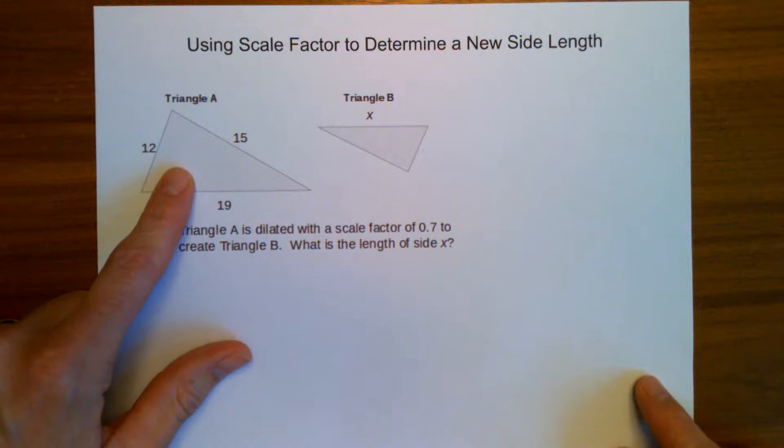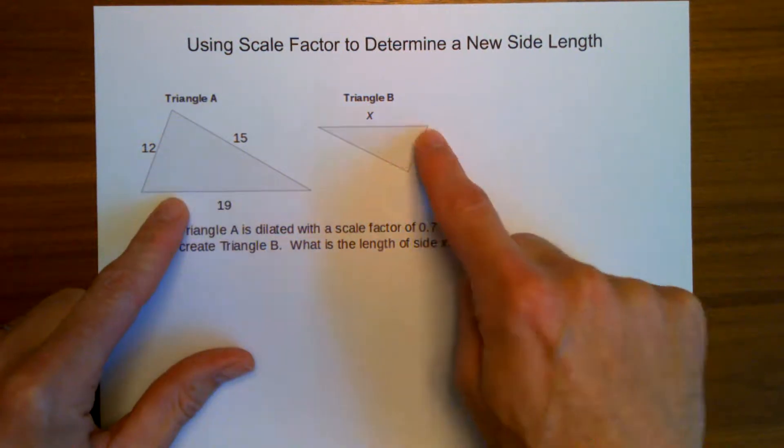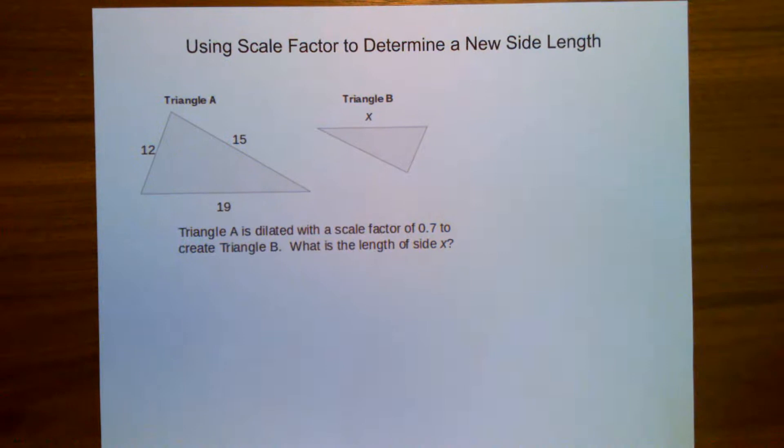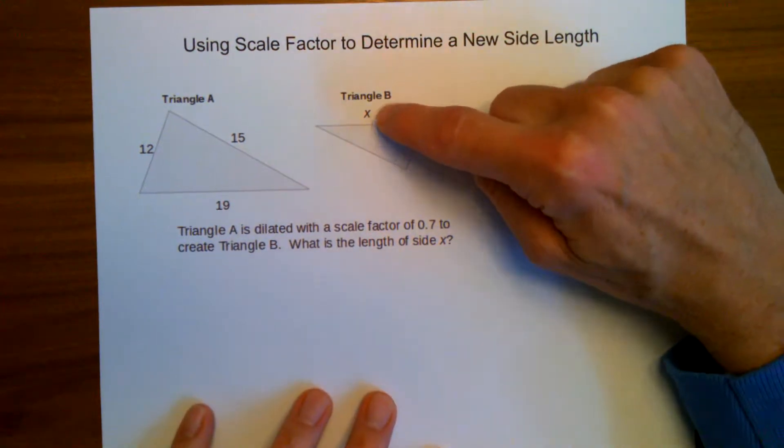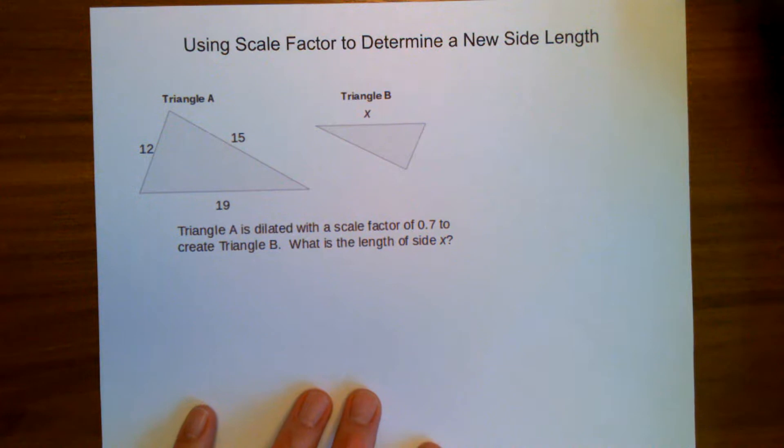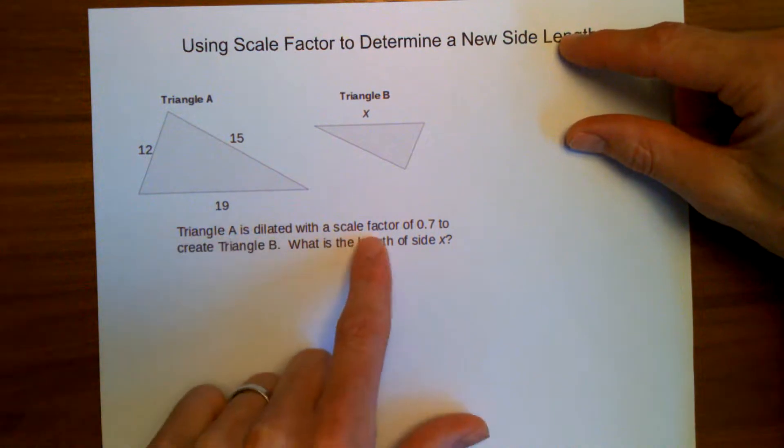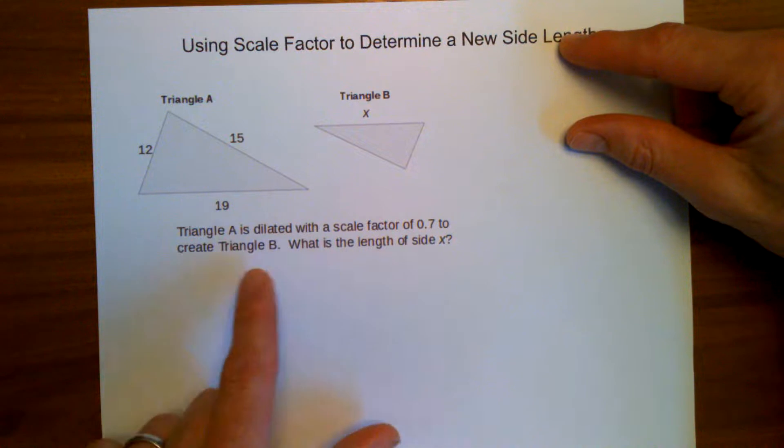We're going to use a scale factor to determine the new side length in this triangle. So we're starting with a larger triangle, triangle A, where I'm told what all the side lengths are. We're going to a smaller triangle where we're not told any of the side lengths, and we're specifically asked what is the side length of this side here, side that's marked with X. It says that triangle A is dilated with a scale factor of 0.7 to create triangle B.